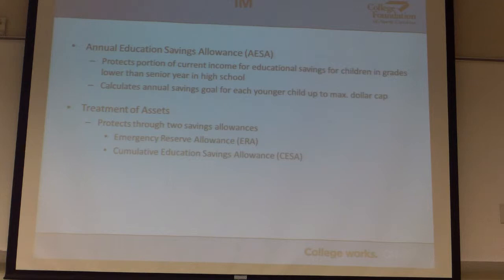The reverse is true in the upper income brackets because of the way we look at assets. But for needy students — a needy student who applies and has an EFC at a school using federal methodology and who also applies to Duke — will get more money at Duke because we'll say their need is greater, almost always, in the low income brackets.